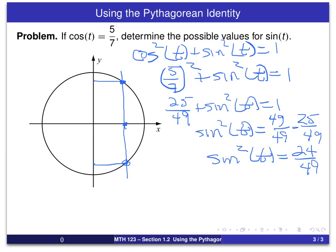So, our last steps will say, sine of t will be plus or minus the square root of 24 over 49. And it's that plus or minus the square root. There are two square roots involved there.